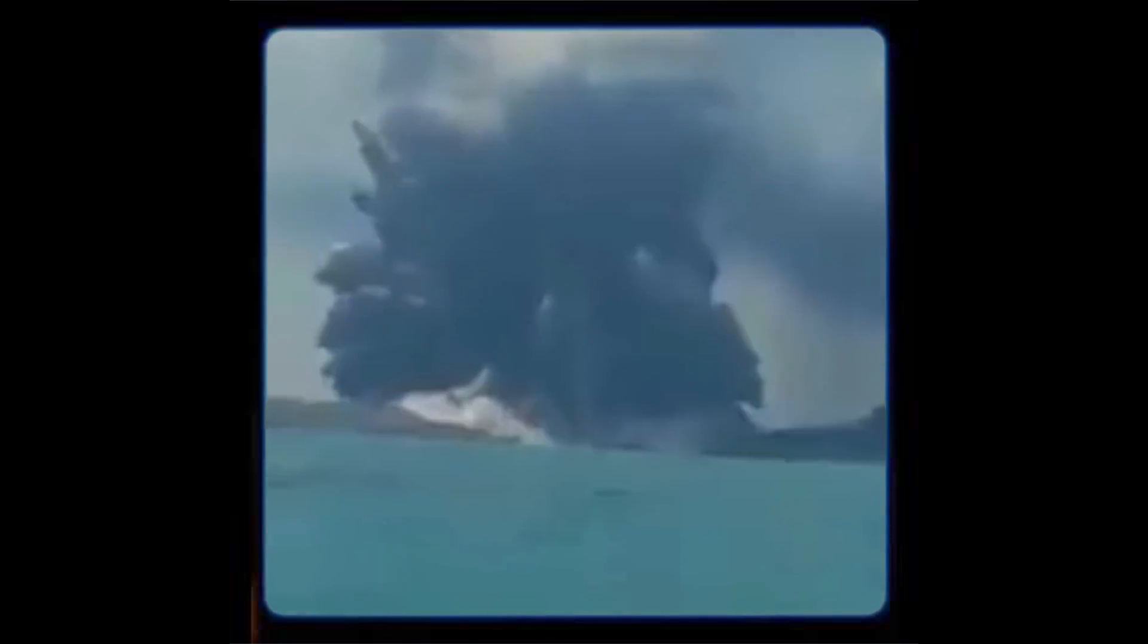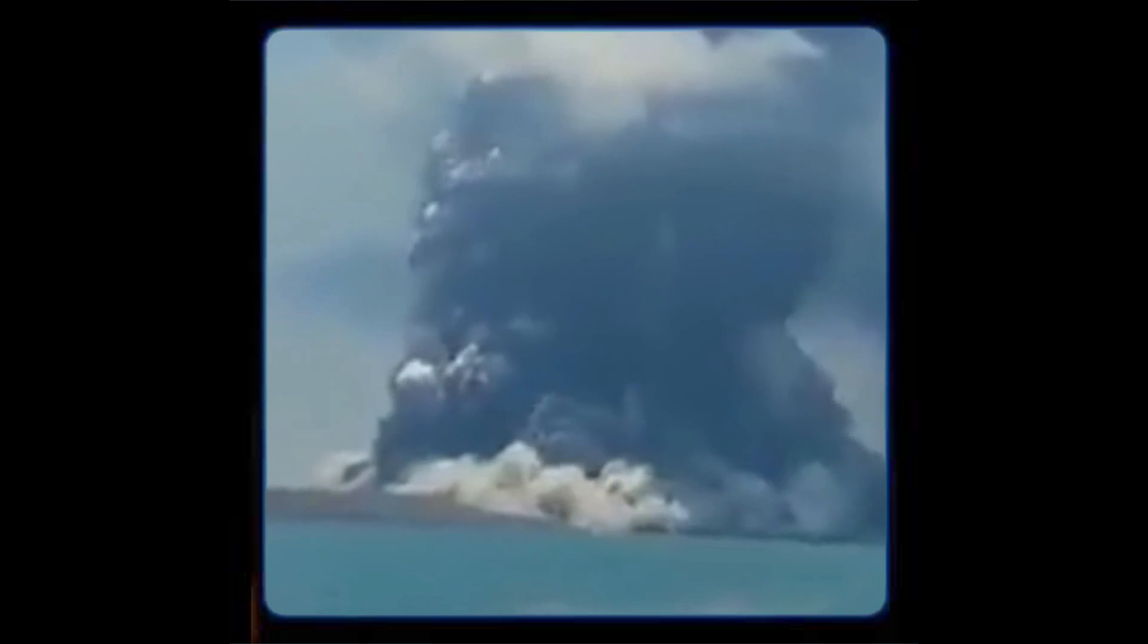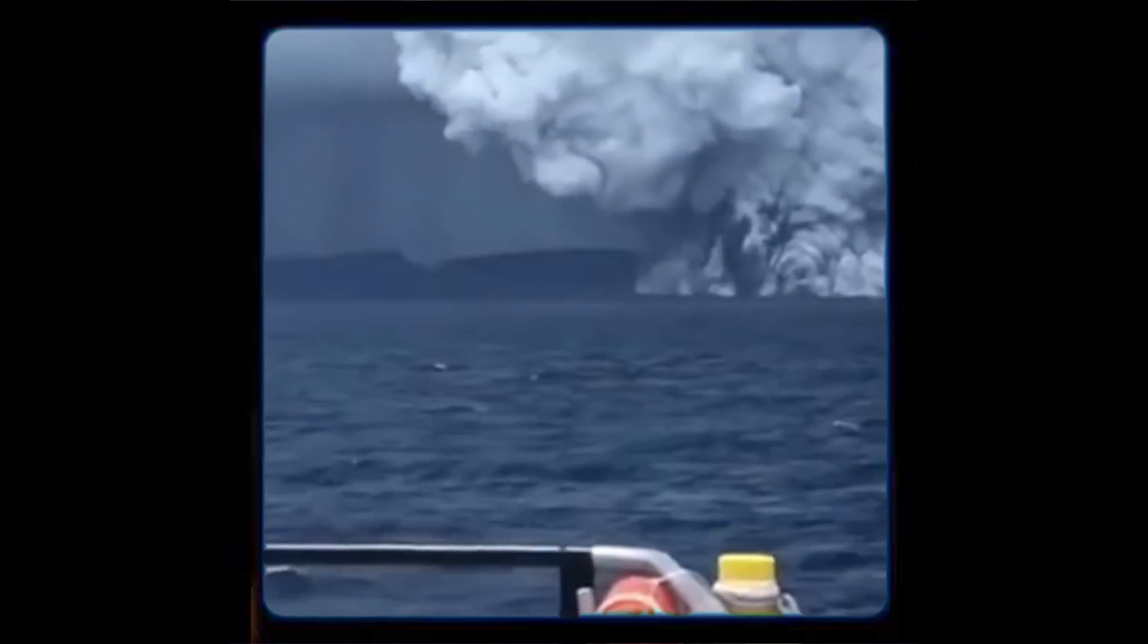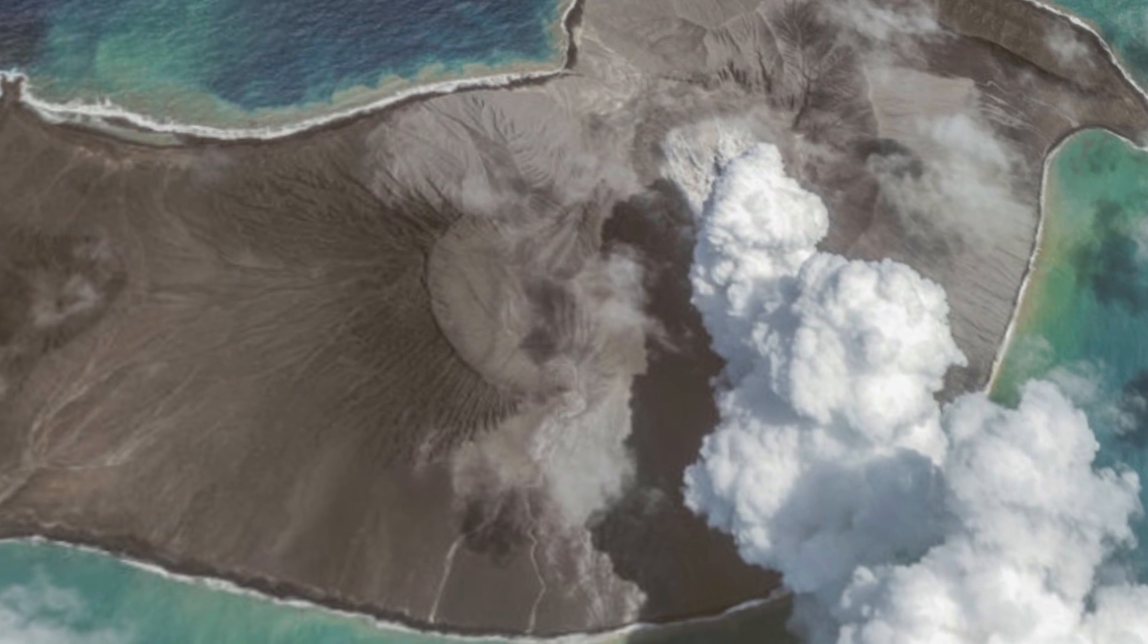A second lesser eruption from vents between Hunga Harpie and the new landmass, joined with rock and debris from the first eruption to fill the gap between them a few days later. The outcome was a single landmass, roughly double the size of Hunga Harpie's original size.